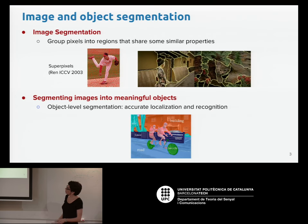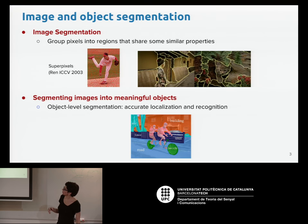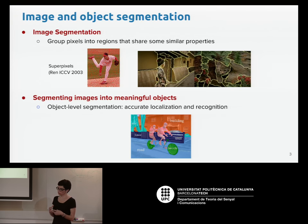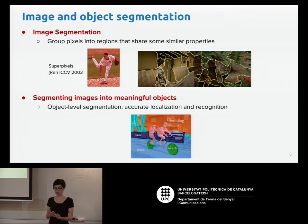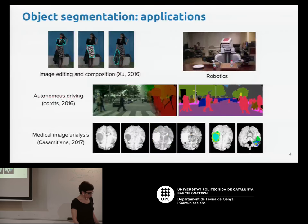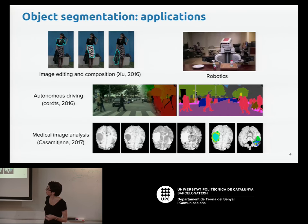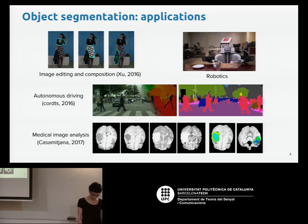Here, instead of talking about the generic segmentation problem where the goal is to group pixels into regions that share some properties like color or texture, the goal is to group pixels into regions that are related to the objects we see in the scene. There are two goals: accurate localization and also recognition — recognizing the class, the category of the object. Object segmentation has several applications, like image editing and composition, robotics, autonomous driving, or medical image analysis.